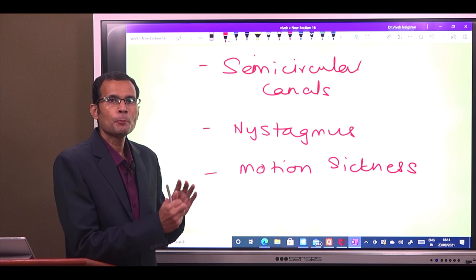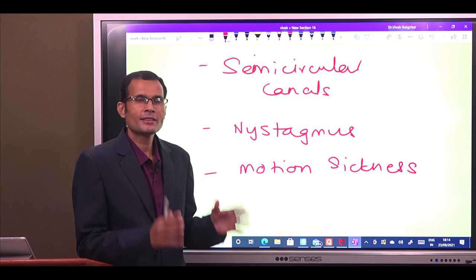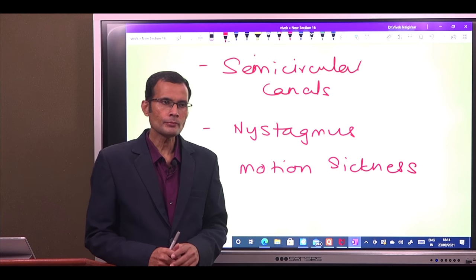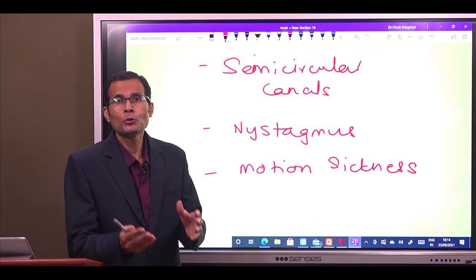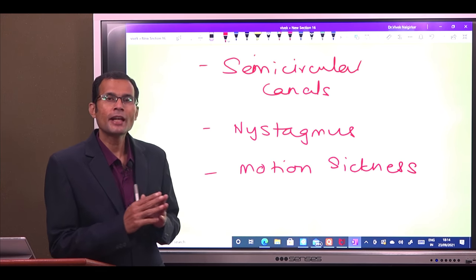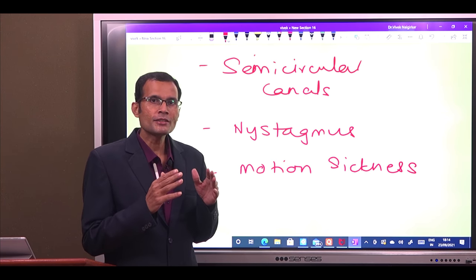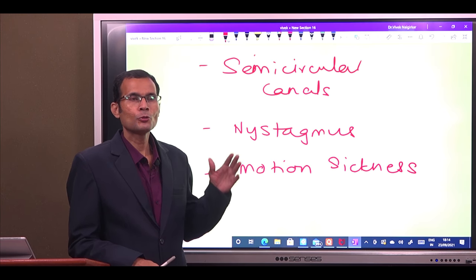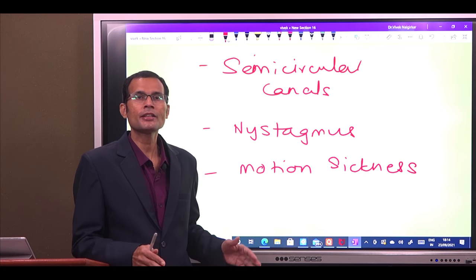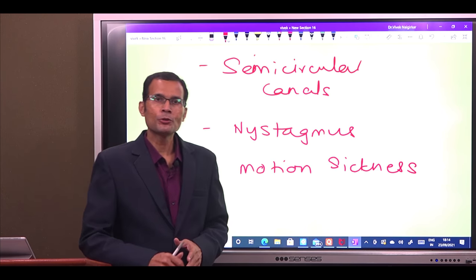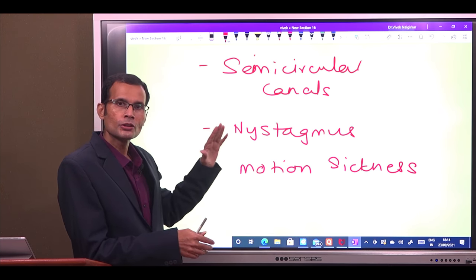Hello friends, let us discuss Part 2 of the vestibular apparatus — we will be discussing the semicircular canals. Before that, it is advisable to go through Part 1 as well, because there we discussed the circuitry involved in the maintenance of the body's equilibrium and balance: the role of the vestibular apparatus, the role of the cerebellum, the role of vestibular nuclei, and the descending tracts.